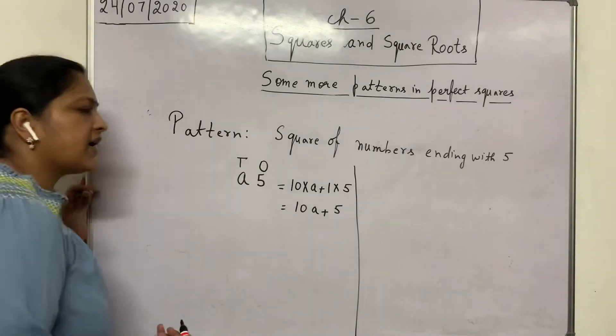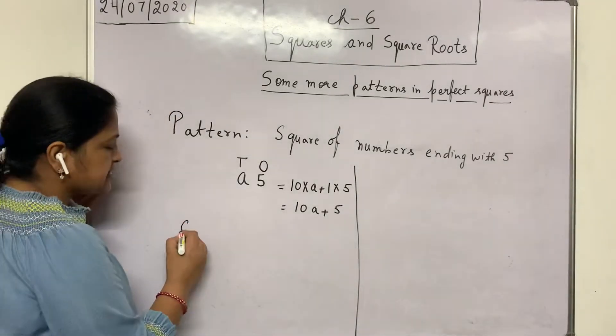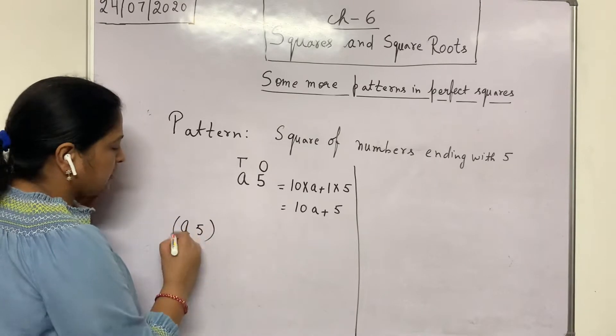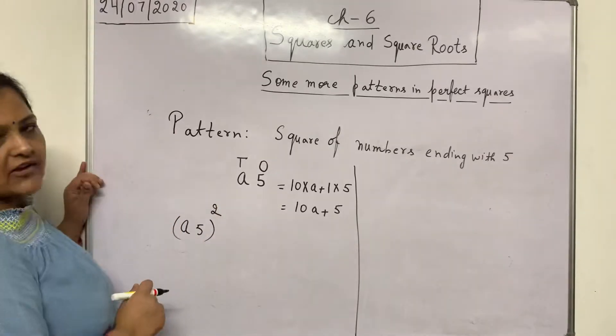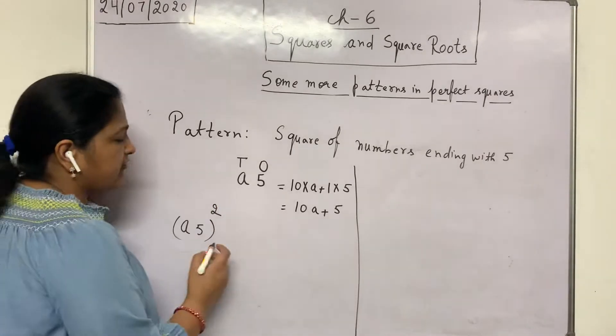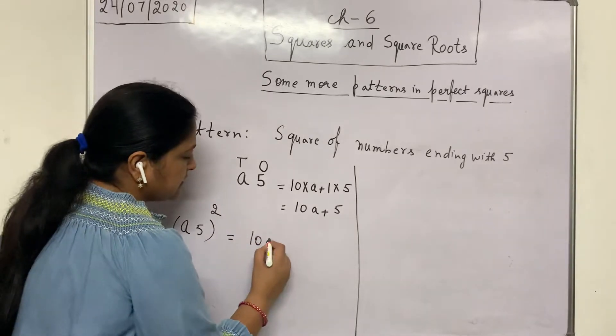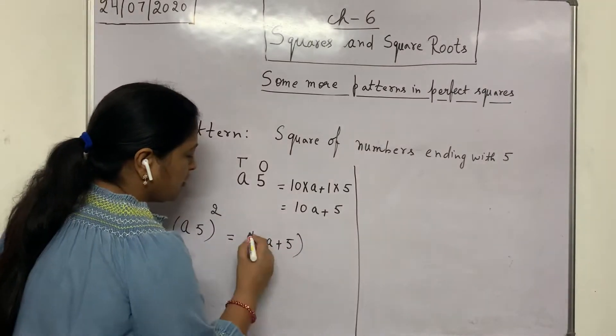Here our target is finding the squares. It means I want to generate a pattern of a5 whole square. a5 whole square I can write as 10a plus 5 whole square.